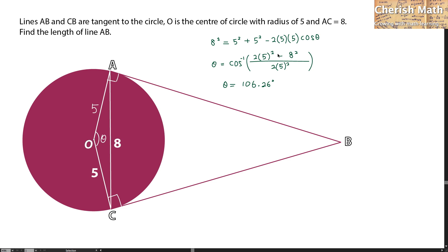For now, I'm going to draw a line connecting from O to B. And I know that triangle OAB is congruent with triangle OCB. The angle AOB is in fact one half of theta. And that is going to be 53.13 degrees.